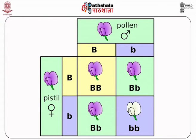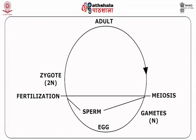An organism that has two different alleles for a gene is said to be heterozygous for that gene and is also called a heterozygote. Mendel also hypothesized that allele pairs separate randomly, or segregate, from each other during the production of gametes — i.e., egg and sperm. Because allele pairs separate during gamete production, a sperm or egg carries only one allele for each inherited trait. When sperm and egg unite at fertilization, each contributes its allele, restoring the paired condition in the offspring.